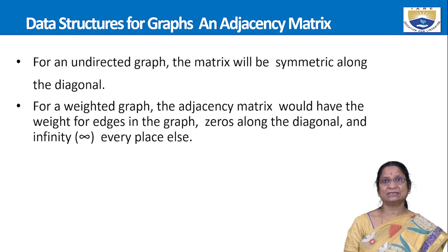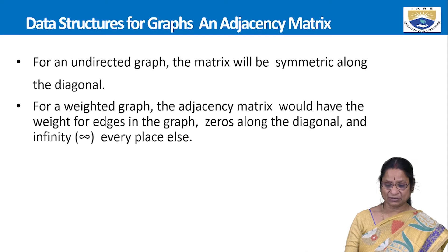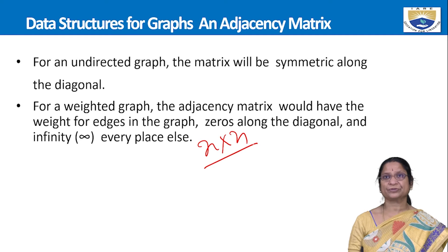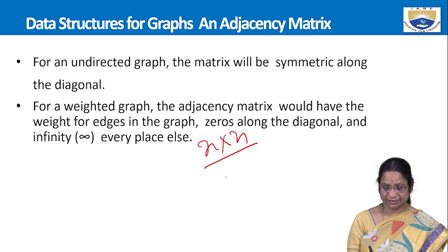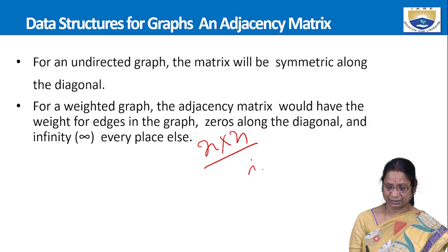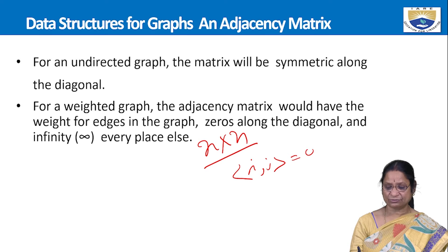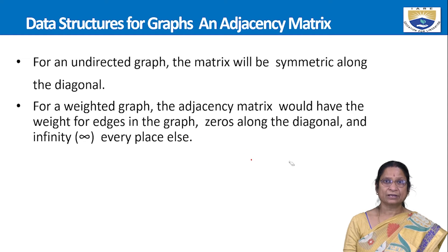In adjacency matrix representation, if there are n vertices, the graph is represented as an n×n matrix. Each element A[i][j] is 0 if there is no edge between vertex i and vertex j, and 1 if there is an edge. This applies to both directed and undirected graphs.